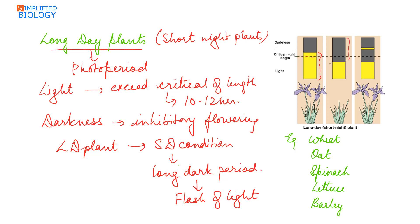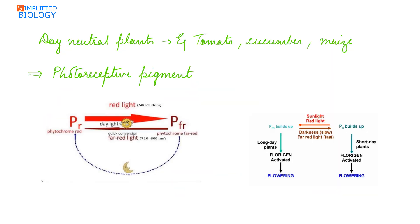Long day plants can be made to flower under short day conditions if a flash of red light is given in the middle of the night, as it breaks the long dark period into two short dark periods, hence promoting flowering. Examples of long day plants are wheat, oat, spinach, lettuce, and barley.